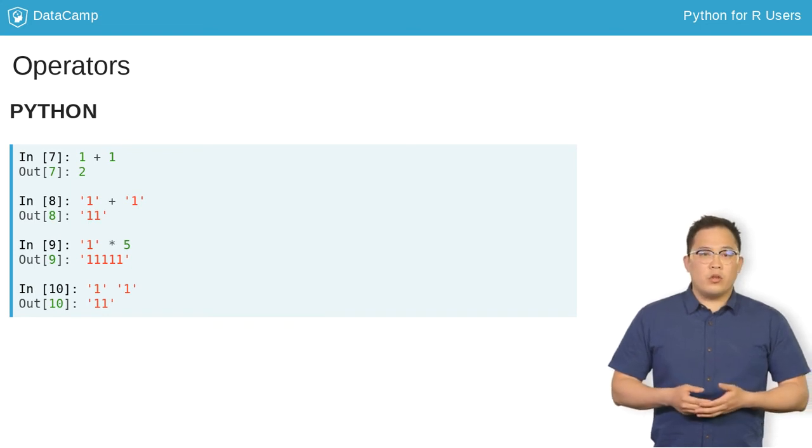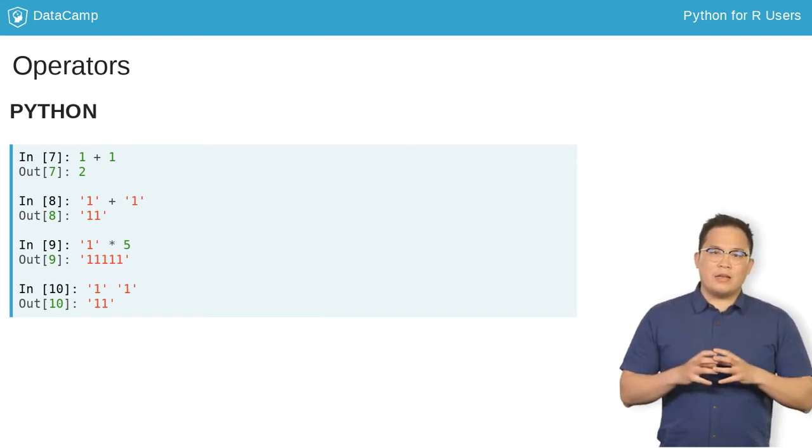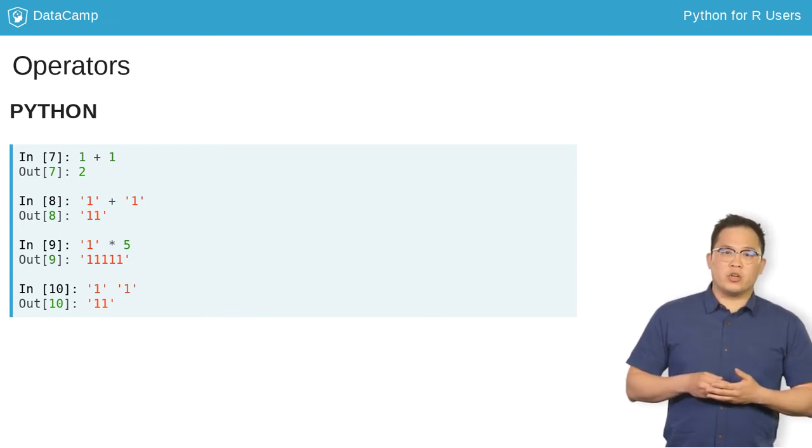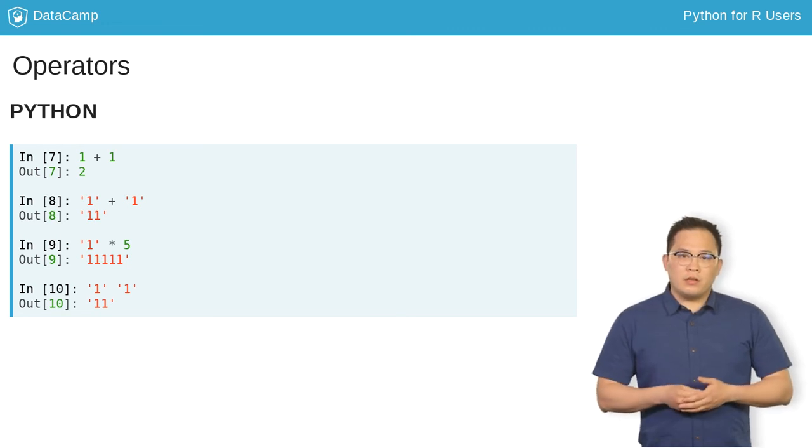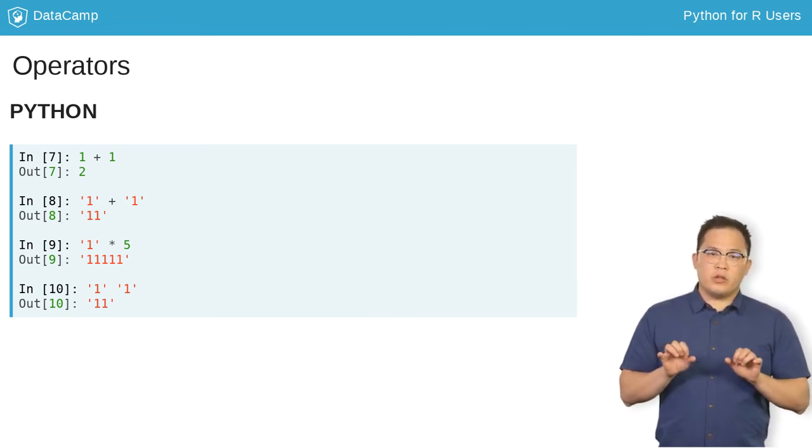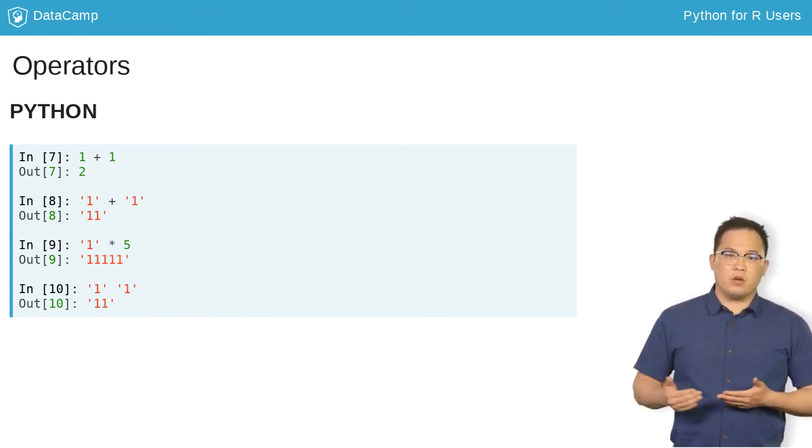In Python, when you add two strings using the plus operator, the two strings are concatenated. A string multiplied by an integer n will repeat the string n times. Finally, strings that are placed next to each other are automatically concatenated. This can be useful if you want to break up a long string across multiple lines of code.